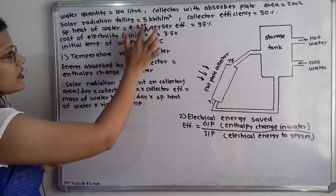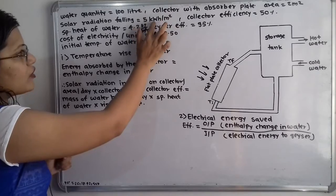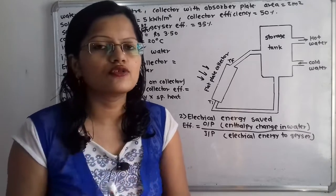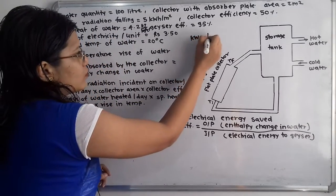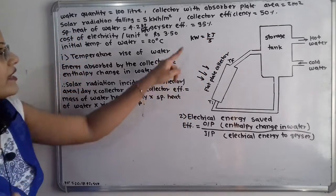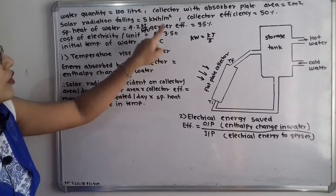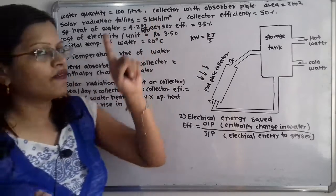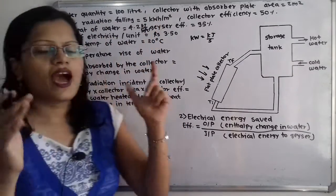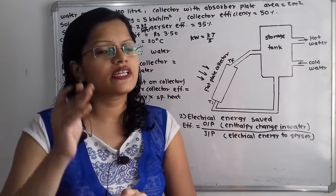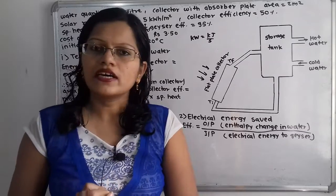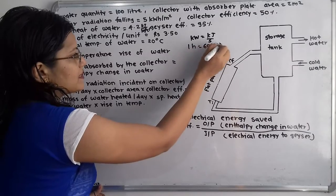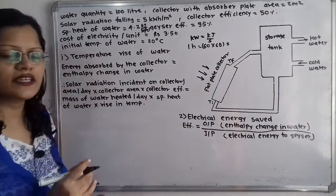Kilowatt means kilojoule per second. So to convert this term into kilojoule, we also have to convert the time into seconds. In 1 hour there are 60 minutes and in 1 minute there are 60 seconds, so 1 hour equals 60 multiplied by 60 seconds, that is 3600 seconds.